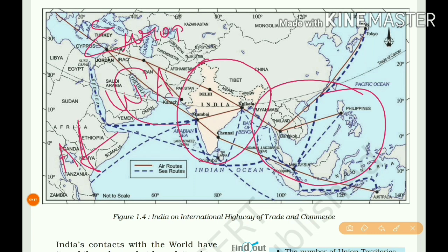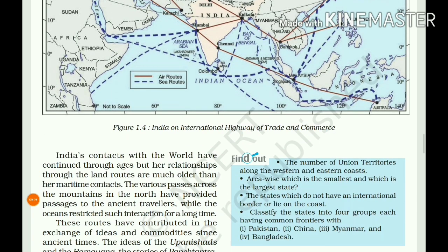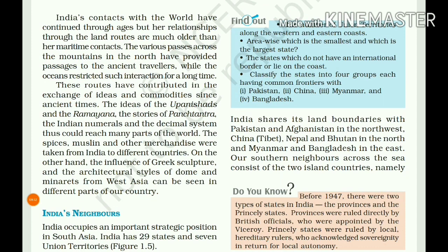No other country has such a long coastline on the Indian Ocean. India's coastline of 7,516.6 kilometers is the longest on the Indian Ocean. This eminent position in the Indian Ocean justifies the naming of the ocean after India.